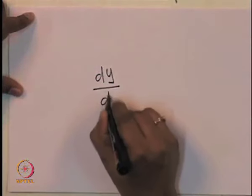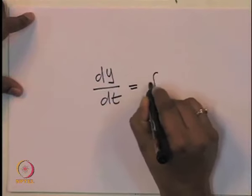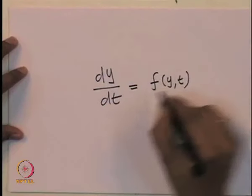In the previous lecture, we discussed simple differential equations of the form dy/dt = f(ay or at). Such differential equations are called ordinary differential equations. We already discussed a few examples including bacterial growth. Today, we will see which other contexts in biology require differential equations.